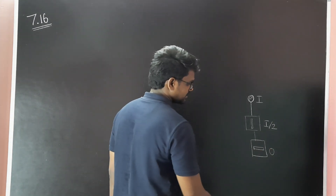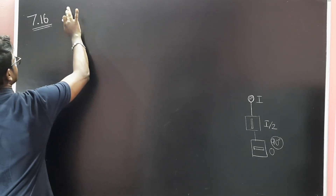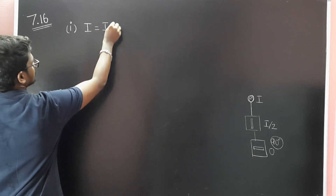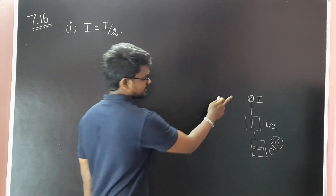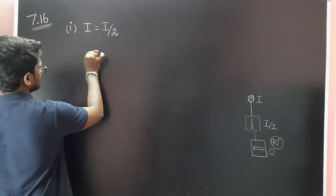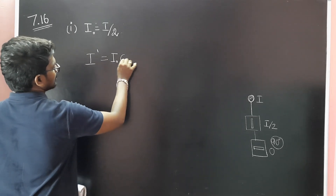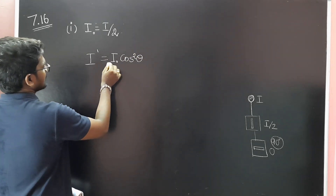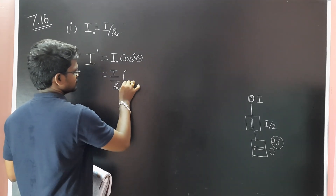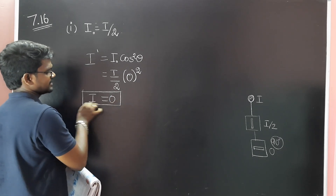The intensity is 0. We can easily say from the first case — in the first case, the intensity from the first Polaroid is I/2. What is I/2? It is equal to I₀ cos²θ. Here, I not times I/2 times cos²θ. Cos θ at 90 degrees: cos 90 is 0. So 0 squared equals 0. The intensity of light is zero.